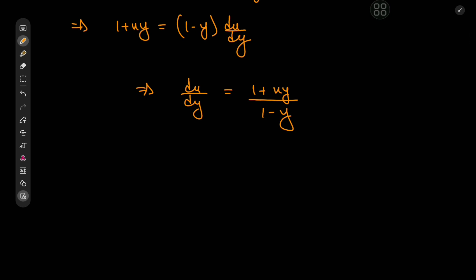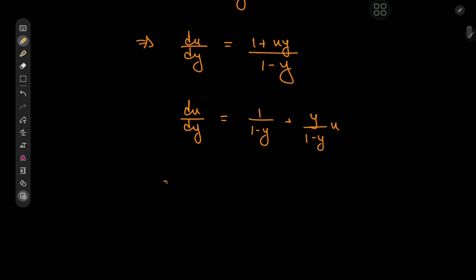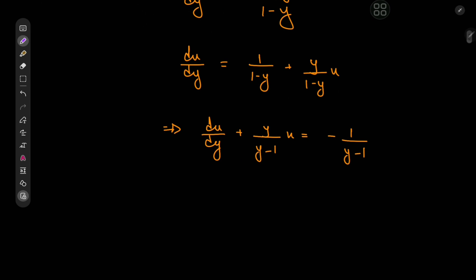We have du by dy equal to 1 divided by 1 minus y plus y divided by 1 minus y times u. This implies that du by dy plus y divided by y minus 1 times u equal to negative 1 by y minus 1. This is just a linear differential equation that we can solve using an integrating factor.